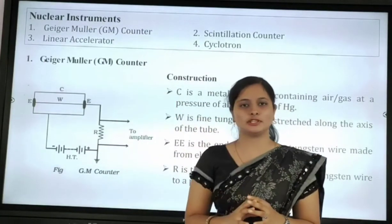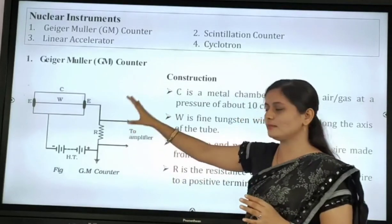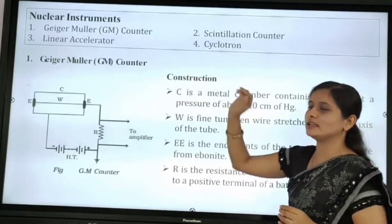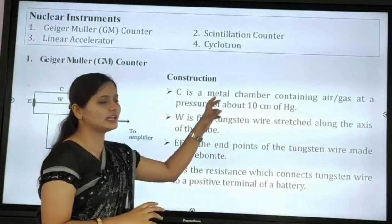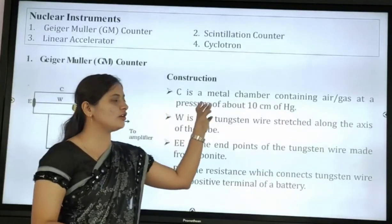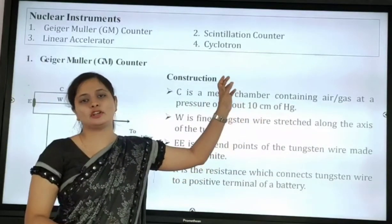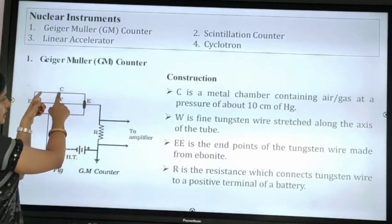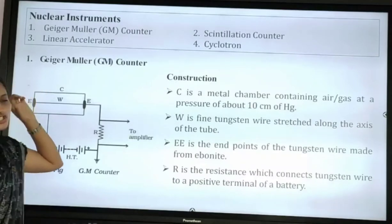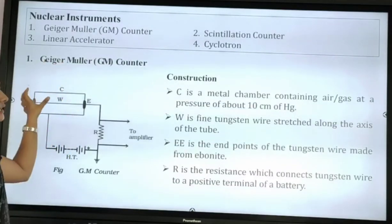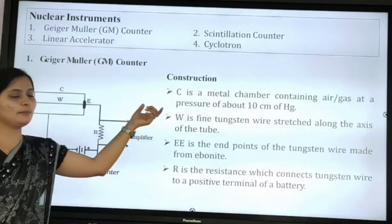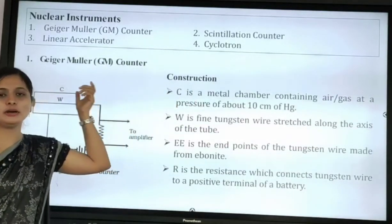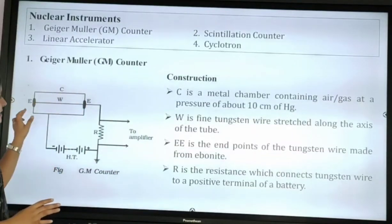We will start with the Geiger-Muller counter. First, the diagram and construction are given. C is a metallic chamber containing air or gas at a pressure of about 10 centimeters of mercury.